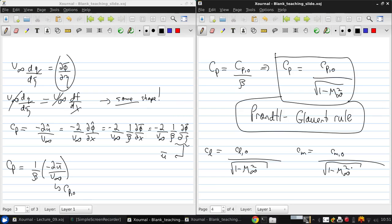So this was the first compressibility correction that was developed. And it's so simple that it's still useful today for initial estimates of compressibility effects. Note that we still have zero drag because this is an inviscid formulation.